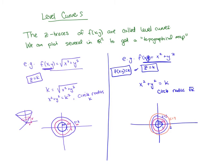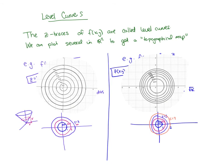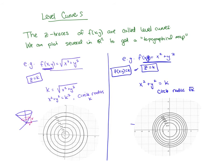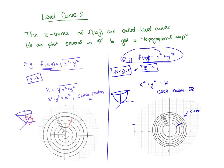Looking at the better-drawn pictures: on the left with the cone, the level curves are evenly spaced for z = 1, 2, 3 because the height goes up at the same rate as the distance from the origin. For the paraboloid on the right, the level curves get closer and closer together because the shape is getting steeper — as we go further out, the surface rises faster, so we reach the next height level sooner.